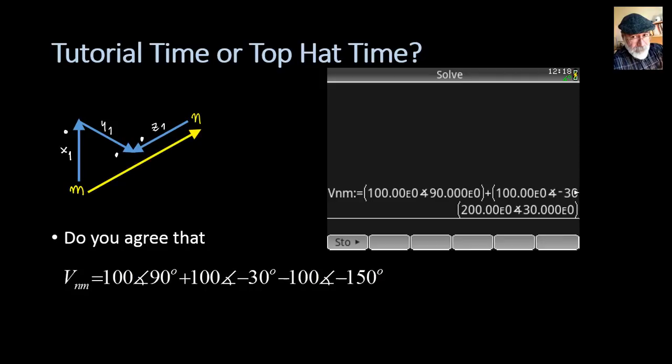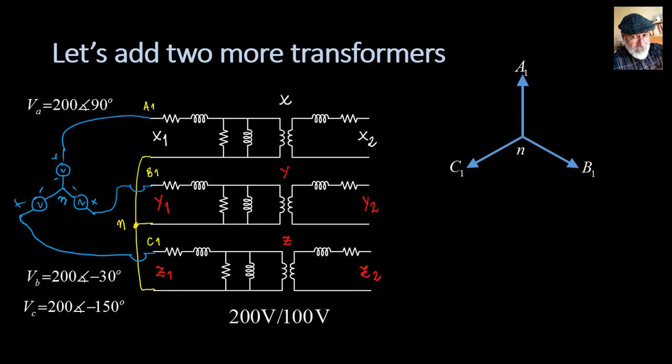The point of this is only to show that we could connect those three secondary coils any way we want and determine what voltages result. A connection like this is more likely because someone made a mistake connecting the secondaries, but we have to be prepared for that. Now let me do something more reasonable.